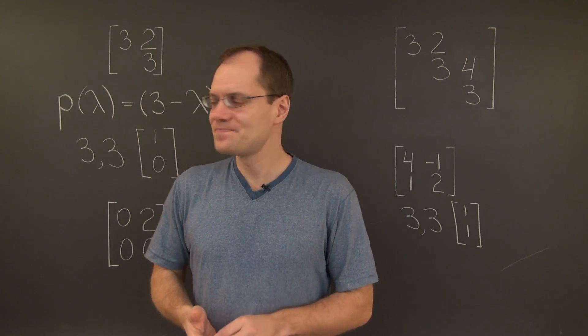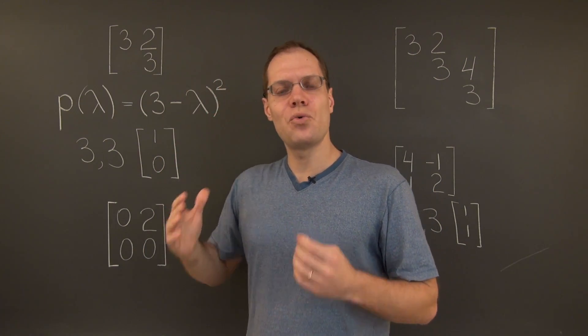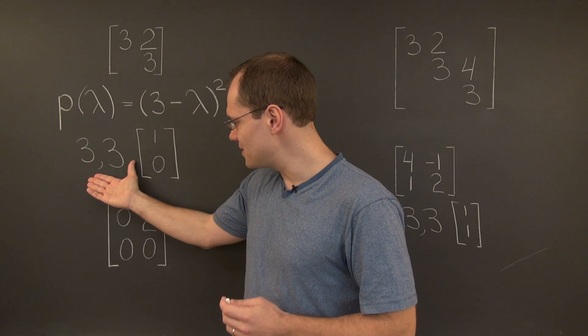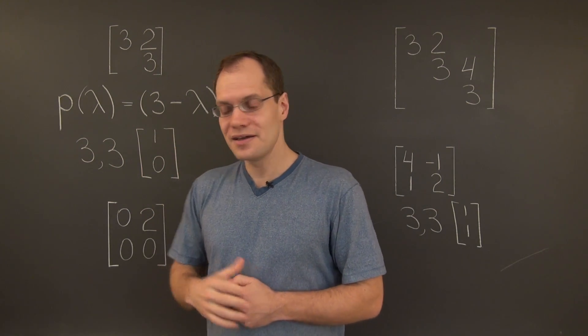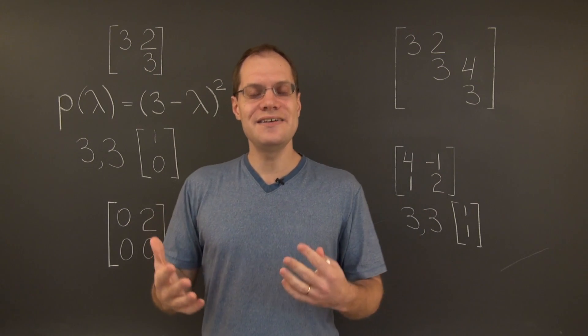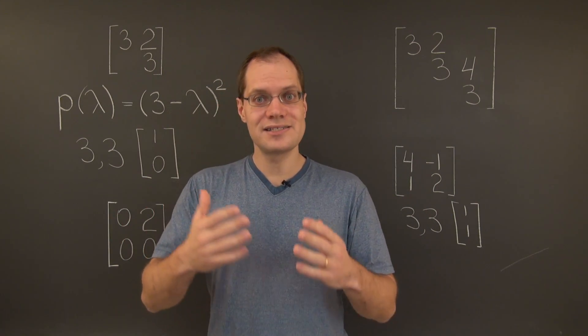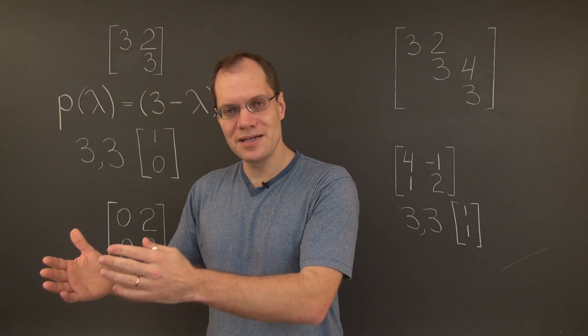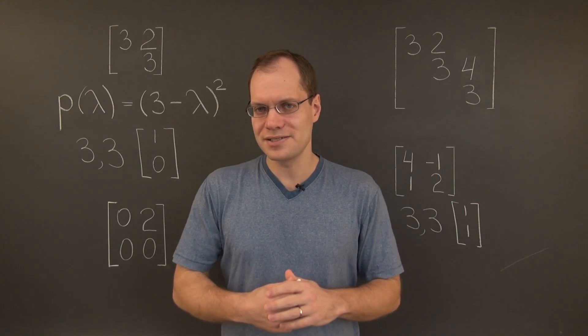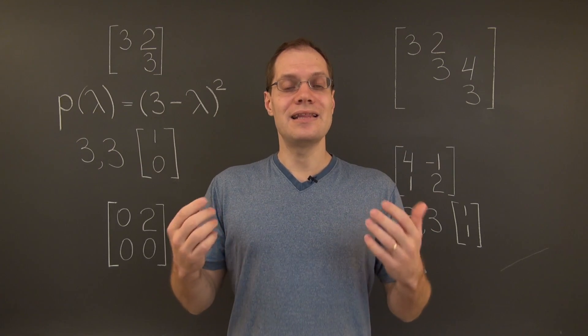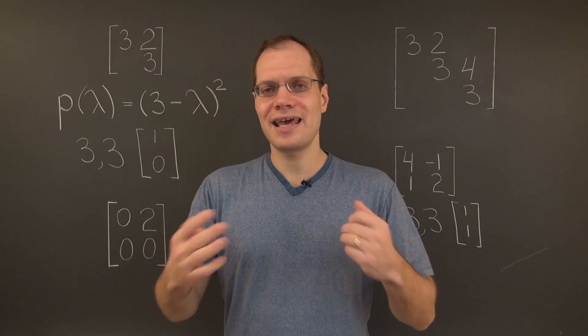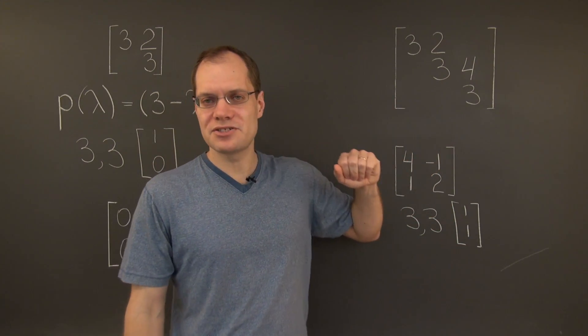Number 2. Let's talk about the defect. The defect is the quantity by which the algebraic multiplicity, in this case 2, exceeds the geometric multiplicity. In this case, it's 1. And so, the defect is 2 minus 1. It's the amount by which the algebraic multiplicity exceeds the geometric multiplicity. Can the defect be greater than 1? And the answer is, of course it can.